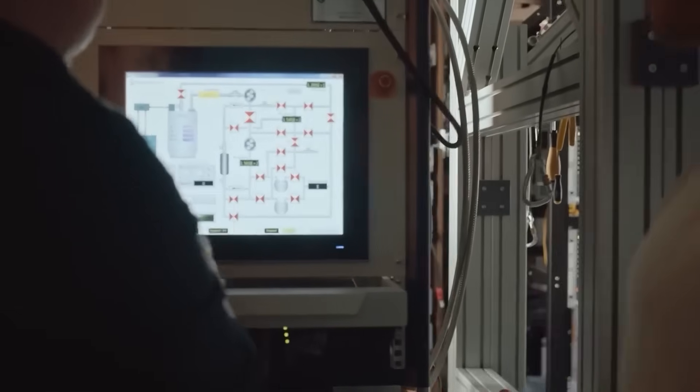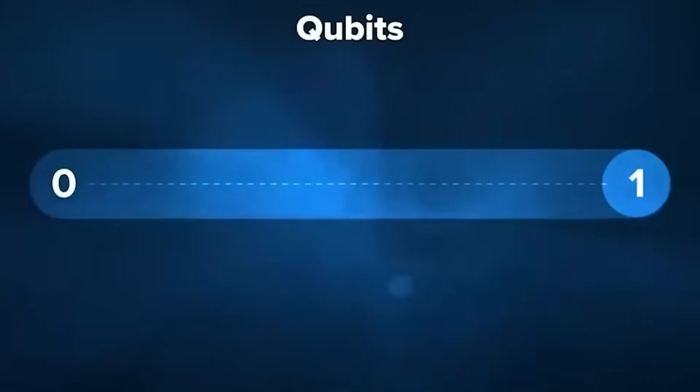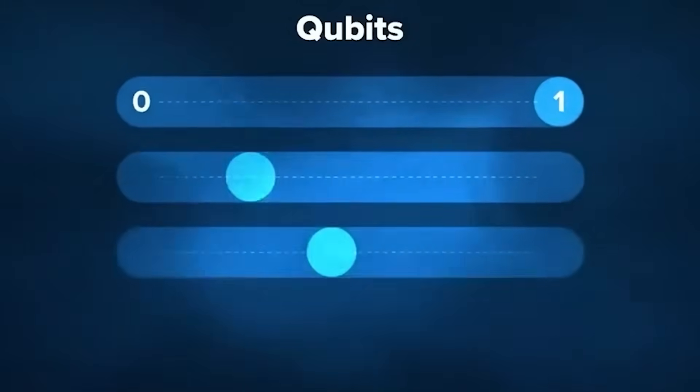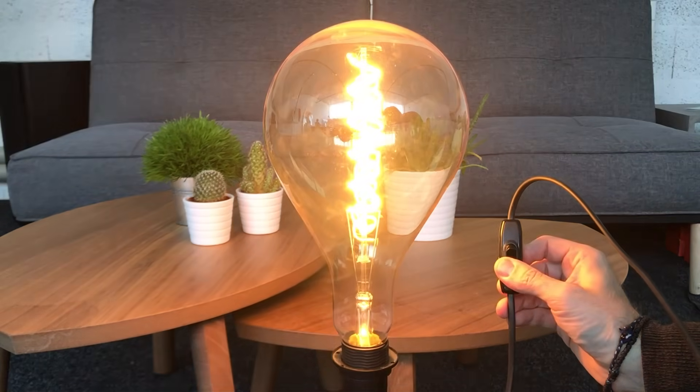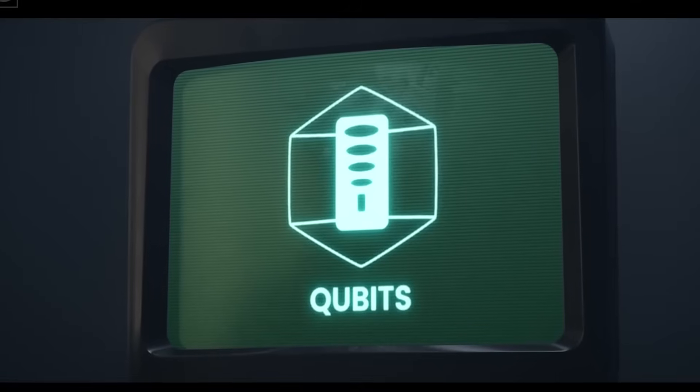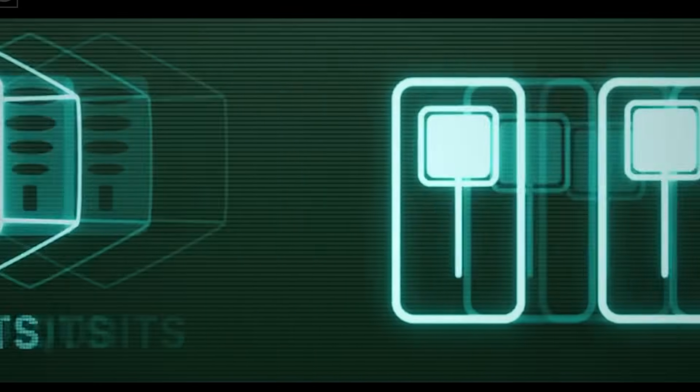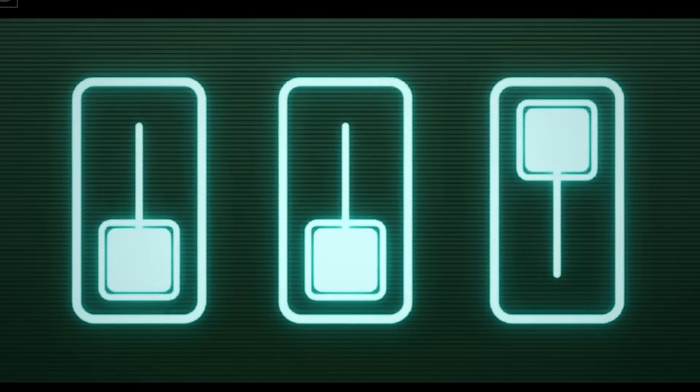Let's break it down without diving too deep into the weeds. Traditional computers use bits—either a zero or a one—to process data. It's like flipping a light switch—on or off. Simple and effective, but limited. Quantum computers, on the other hand, use qubits. Now here's where things get wild.